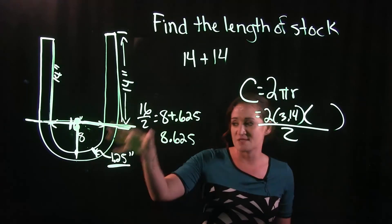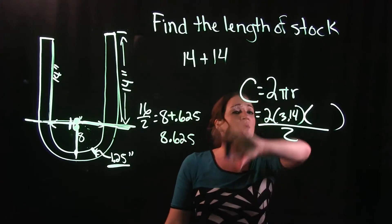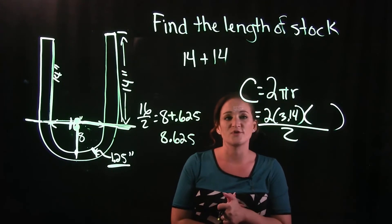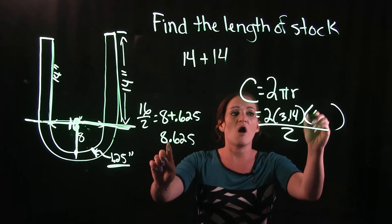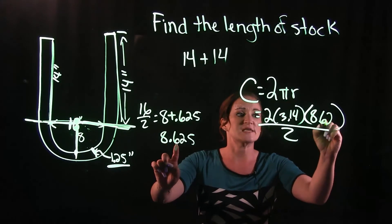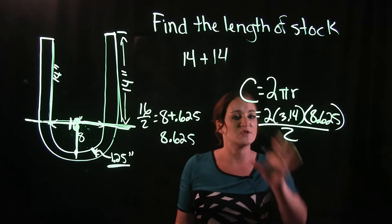Otherwise we're using the regular formula for circumference of a circle: 2πr. Our r is going to be 8.625, and because we only have half of a circle, we're going to be dividing this by 2.